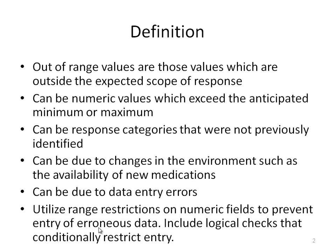Utilization of range restrictions on numeric fields to prevent entry of erroneous data can help reduce out-of-range values. In addition, logical checks can conditionally restrict entry of out-of-range values. There is a trade-off here — if you put a lot of time into conditional logical checks based on other variables elsewhere in the system, it can actually slow down data entry. So you need to make choices about how much checking you want to do at the point of data entry and how much you want to do post-hoc.